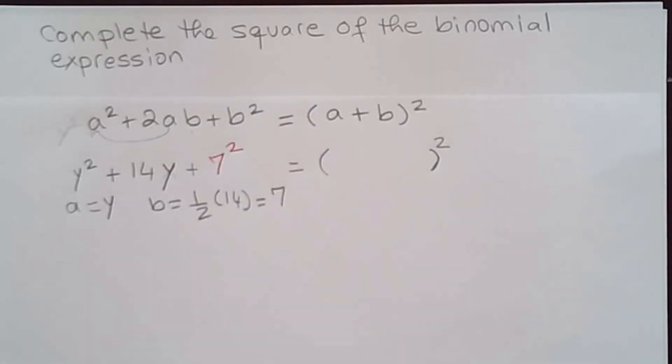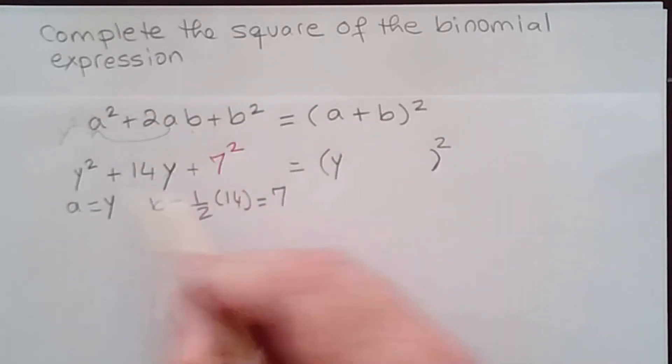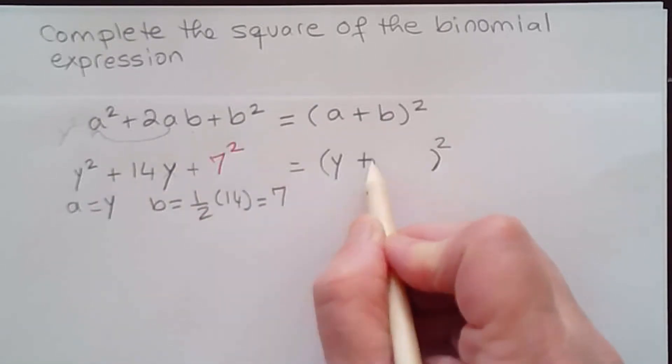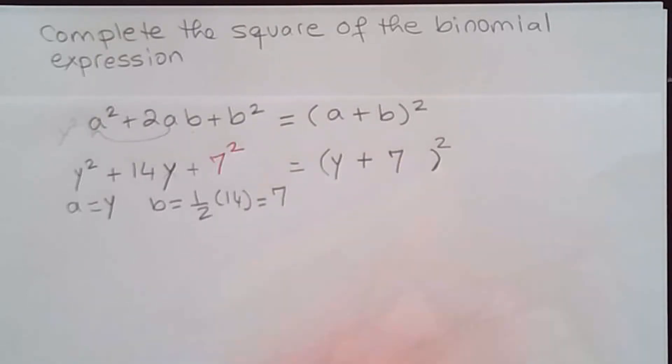So let's take a look. a is y, plus—the sign here is always the sign of whatever you have here—so plus b is what? b is 7. And we already have a square. We just completed the square.